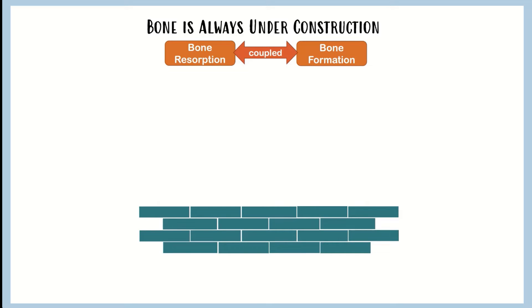So resorption or demolition of the bone is a good thing - a healthy thing - in order to set the scene for very healthy bone to form on top. Resorption and formation are both healthy things; they're both meant to be happening and they work together.